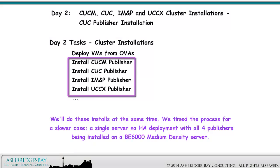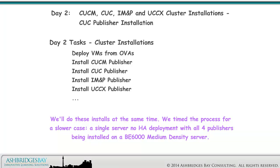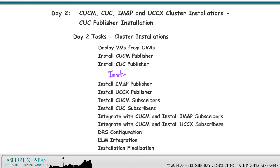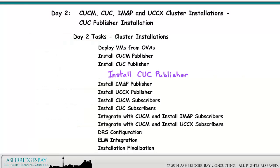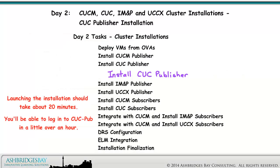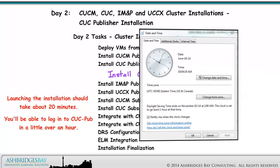We'll do these installs at the same time. We timed the process for a slower case — a single-server NoHA deployment with all four publishers being installed on a BE6000 medium-density server. Start the CUCPUB installation at 9:20. Launching the installation should take about 20 minutes, and you'll be able to log into the CUCPUB in a little over an hour.